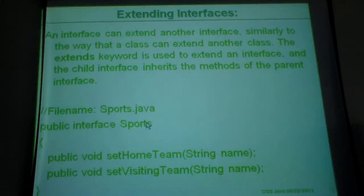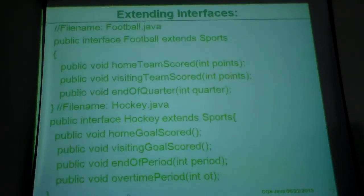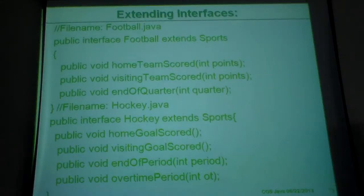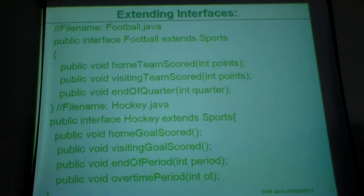A public interface is abstract and has one public method. There is a second interface as well. Looking at the difference between this program and the previous one: the previous program had one interface, and we made an implementation of it and created an object to get the result. Now we need to extend the interface with another interface.